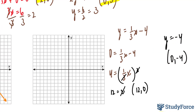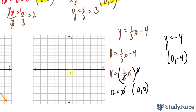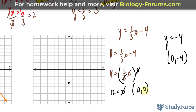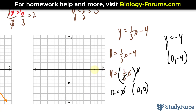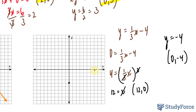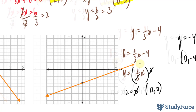Let's go ahead and plot that. (0, -4) is 1, 2, 3, 4 down here. And (12, 0) is 12 units from the origin — we'll count to 10 and assume two more blocks to the right. Putting a line through these points, that right there represents what our equation should look like.